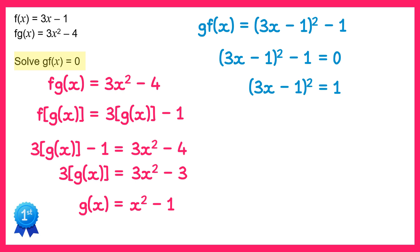Then square root both sides, on the left you'll get 3x minus 1, and on the right you'll get 2 solutions, plus or minus 1. And then we add 1 to both sides, so we get 3x equals 1 plus or minus 1, and then divide both sides by 3.